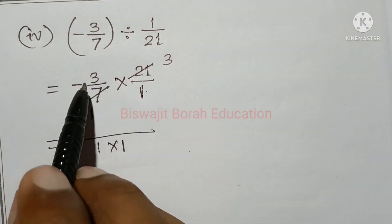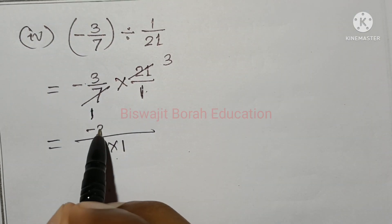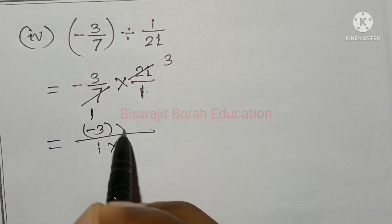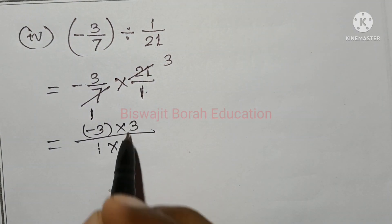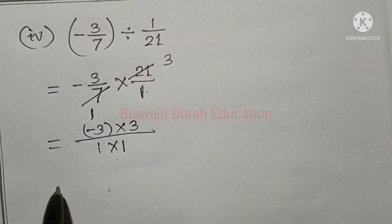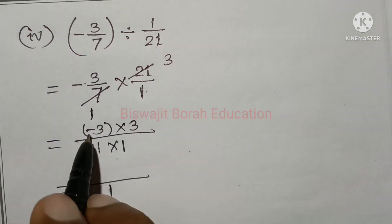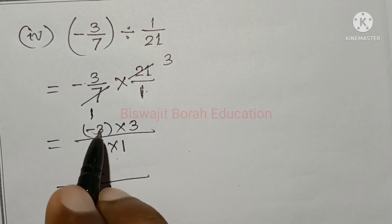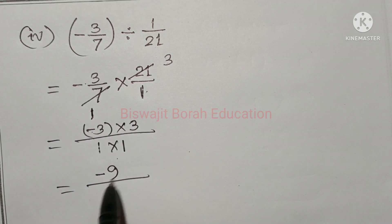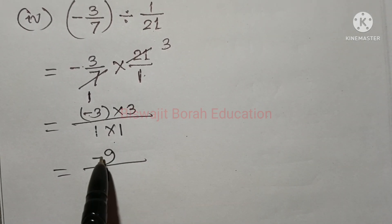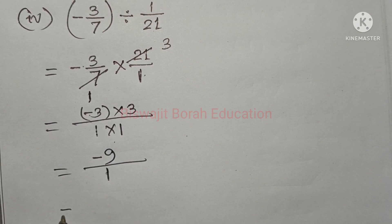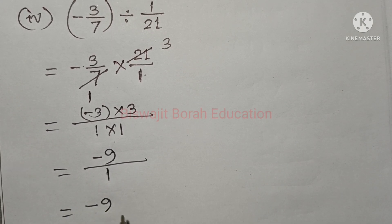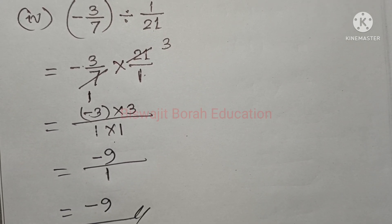So this is minus 3 into 3. The equivalent of 1 to 1 is equal to minus 1 plus minus 3 is equal to 9. So minus 9 by 1 is equal to minus 9. So the equivalent of 1 is equal to minus 9. So minus 9 is equal to 1.